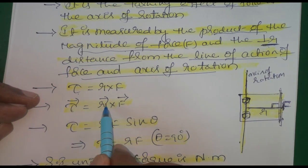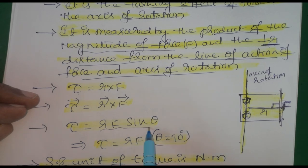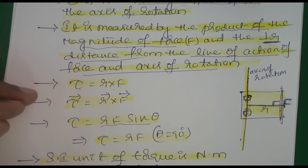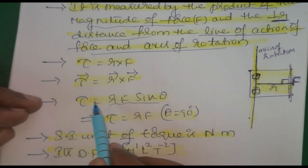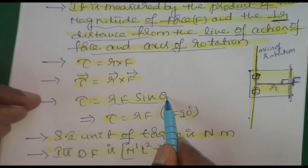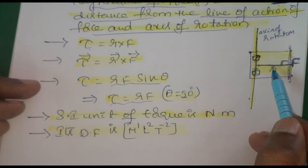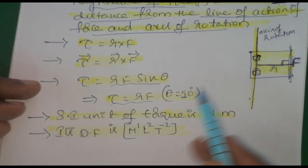So τ equals r into F. In vector form, taking cross product of vectors, tau bar (τ̄) equals r bar (r̄) cross F bar (F̄). Formula is r F sin θ by cross product of vectors definition. τ equals r F sin θ. If r and F are perpendicular, θ value is 90 degrees, so τ equals r F because it's perpendicular distance.